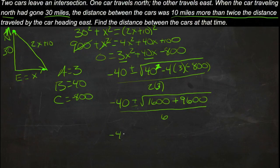Which gives us negative 40 plus or minus the square root of 11,200 over 6.